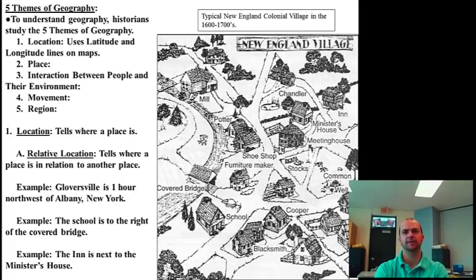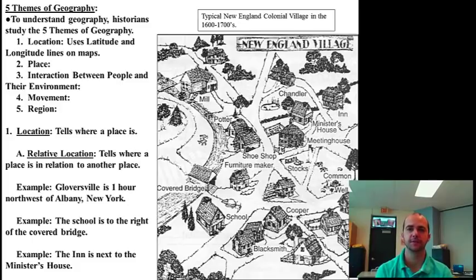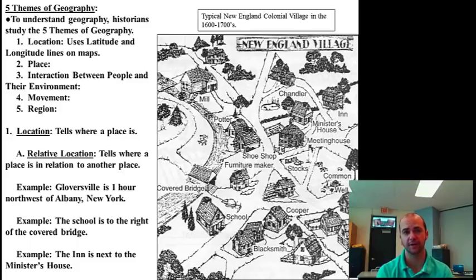Today we're going to look at the five themes of geography. It's important to understand all five of these themes, and we'll spend the rest of these lectures going through them. Historians study the five themes of geography: the first is location, using latitude and longitude to find locations on maps. Second is place. Third is interaction between people and their environment. Fourth is movement, and the fifth is region. Those five themes encompass all of the areas of study in geography.